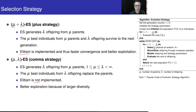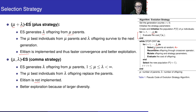When we talk about the plus strategy — μ+λ — each cycle we generate λ offspring from the μ parents. Because we implement the plus strategy, the population has μ individuals and the offspring has λ, giving μ+λ total individuals, from which we pick the μ best.